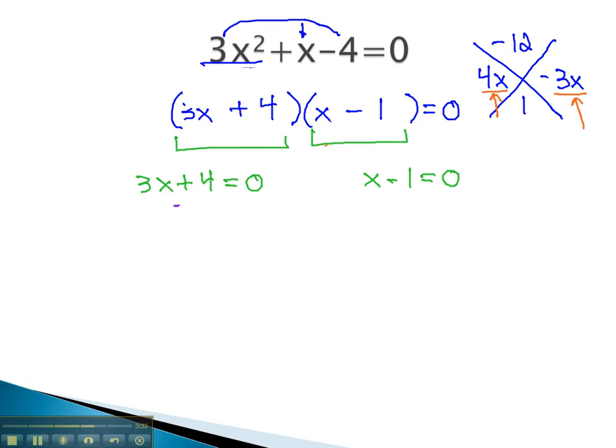We can solve by subtracting 4 from the first equation, giving us 3x equals negative 4, finally dividing by 3. The first factor is 0 when x is negative 4 thirds.